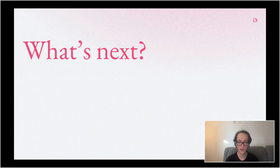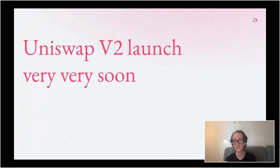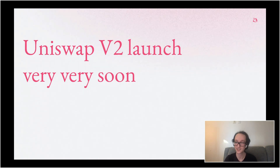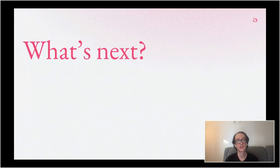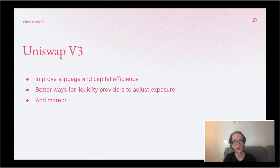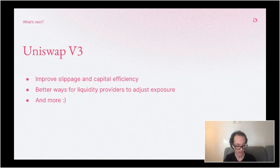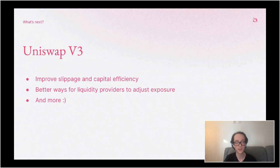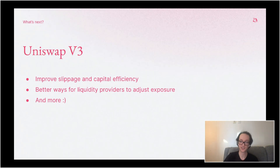After Uniswap V2, our development team is immediately going to start working on Uniswap V3. First off, Uniswap V2 launches very, very soon — I expect to hear more details by the end of the week. After that, we're going to be working on Uniswap V3. The idea of Uniswap V3, as I mentioned, is to improve on the slippage and capital efficiency, and provide better ways for liquidity providers to modify their exposure. There's a whole bunch more, but I don't want to get too in depth on it — I just wanted to hint at it. Expect to hear more about this in coming months.